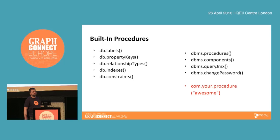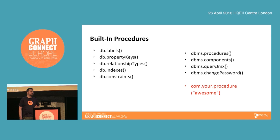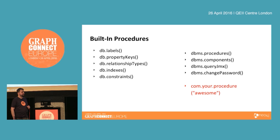Neo4j 3.0 comes with a couple of built-in procedures. What you used to do via the REST API or the shell — things like accessing the schema — is slowly moving over to built-in procedures. So there are procedures for getting the list of all labels, property keys, relationship types, indexes, and constraints. These are exposed as procedures. Then there are more system-centric procedures for listing the procedures themselves, getting information about the database, querying the monitoring system, and changing your password — and we're sure to see many more interesting procedures going forward.